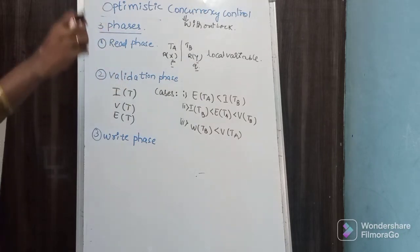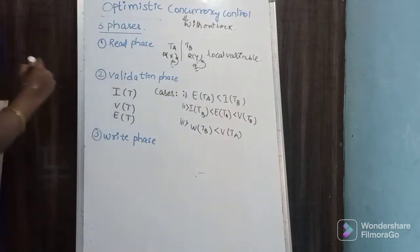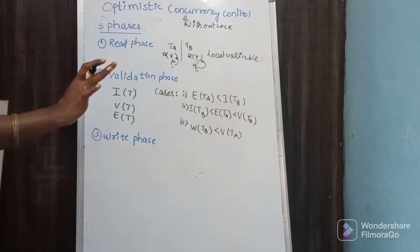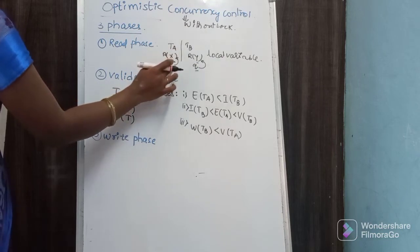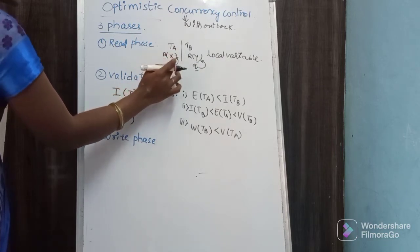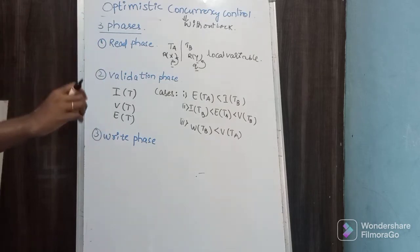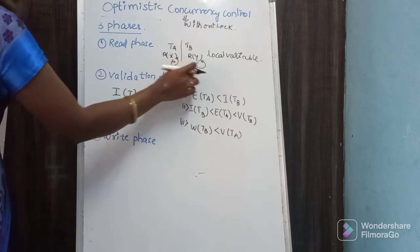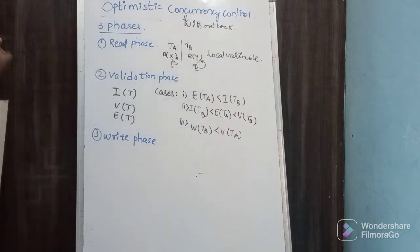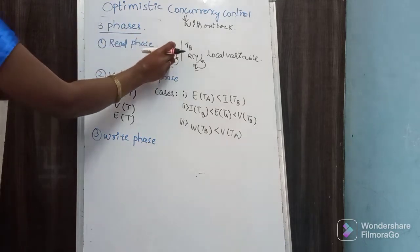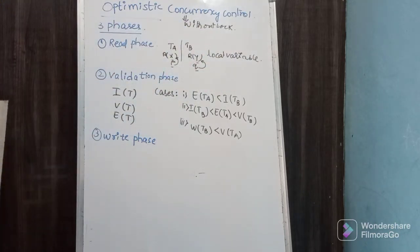After completion of everything, if the data is consistent after the transaction, then you update the original data into X and update original data into Y. That means temporarily we are not touching the database — we are just making a copy of the data into temporary variables P and Q. Simply in the read phase, we read data from the database and store it temporarily in local variables.